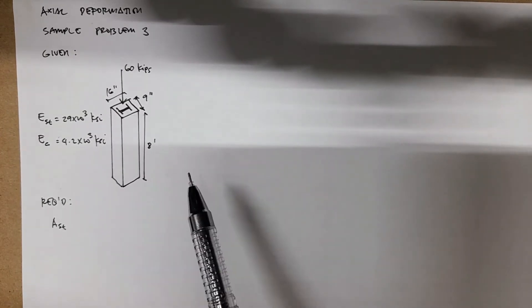For this problem, we are required to find the cross-sectional area of steel so that the 60 kip vertical load is equally shared between the steel and the concrete. The problem statement is written in the description of this video.